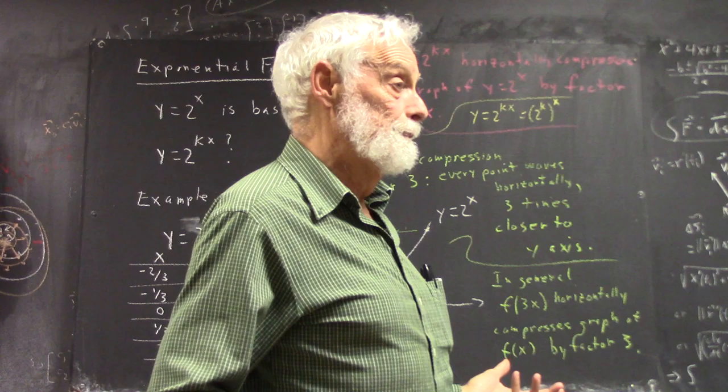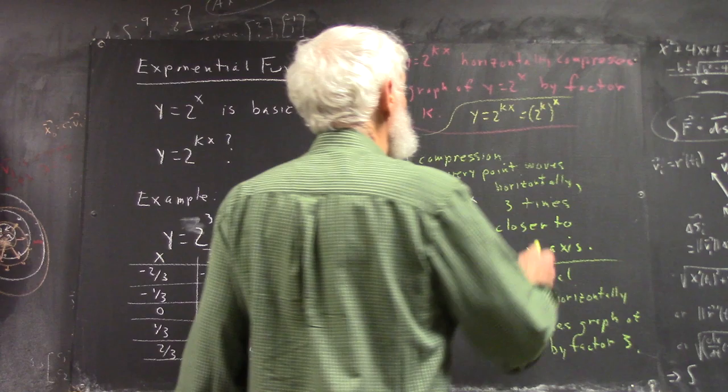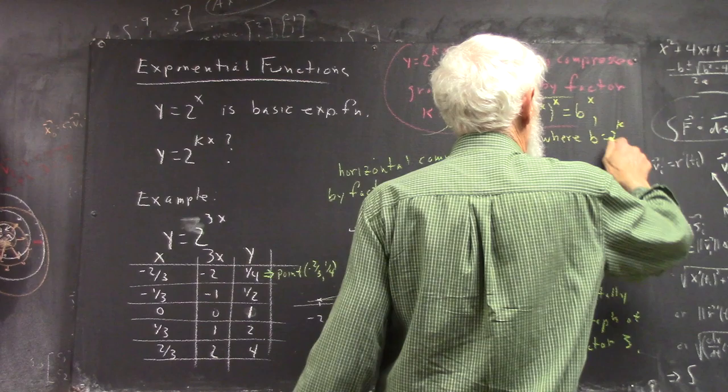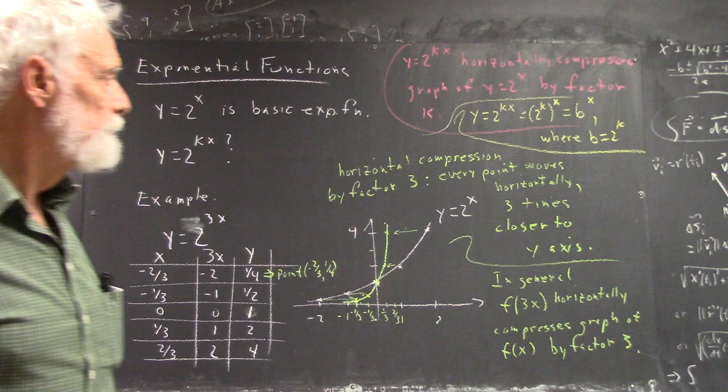You could also write it as 2 to the x to the k, but that wouldn't be particularly helpful. This is very helpful. Because this, we can say, is equal to b to the x, where b just equals 2 to the k.